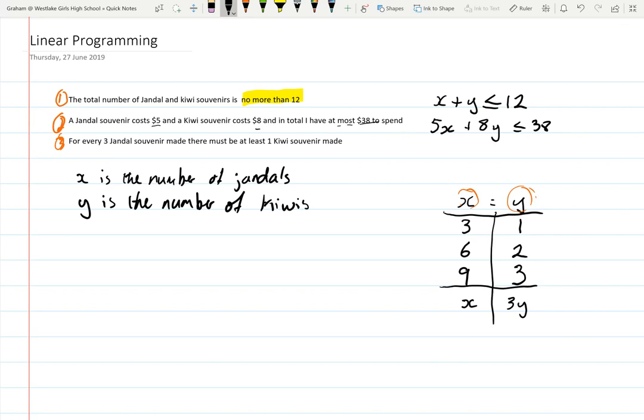The way I do that is I have to multiply all of these numbers by three, and that's counter-intuitive because you think the three in front of the Jandall means you'll likely multiply the Jandall number by three, but you don't. Now having worked out what it is for an equals, I can now turn my attention to these words and it says there must be at least. So this number could be one or it could be two or it could be bigger than two.